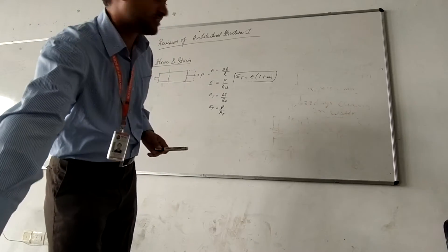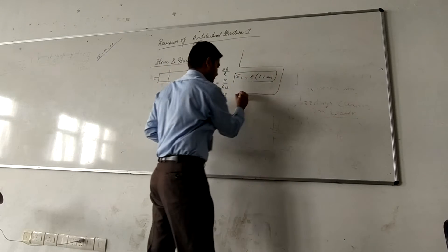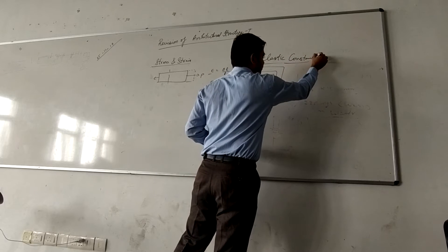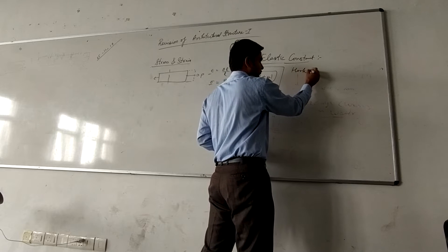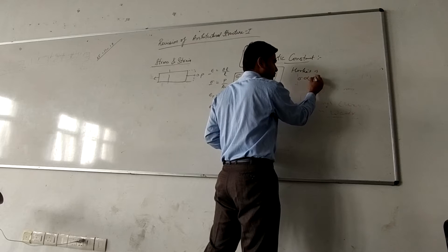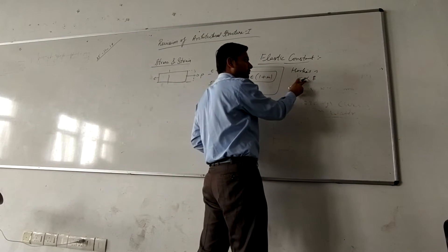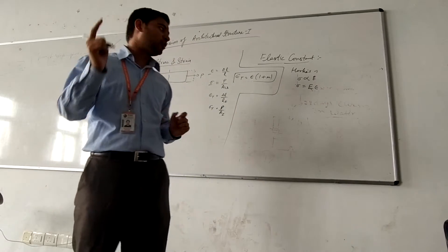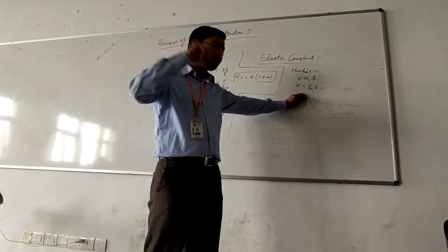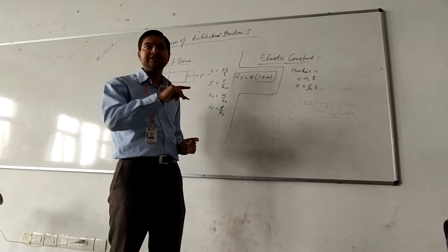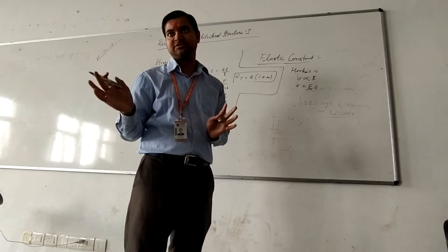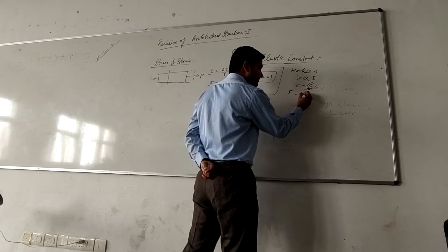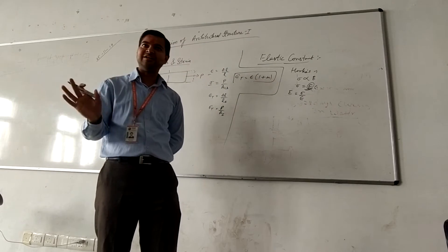Now coming to elastic constants. Have you studied any elastic constants? Hooke's law — Hooke says stress is directly proportional to strain. When we remove the proportional sign we get a constant E, which is the modulus of elasticity — this is the elasticity constant. There are 3 or 4 such constants. Modulus of elasticity is given by stress divided by strain; the ratio of stress to strain is known as this constant.